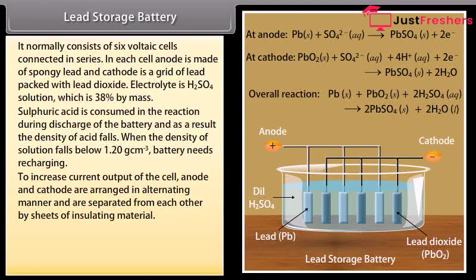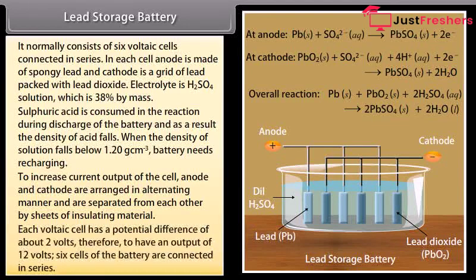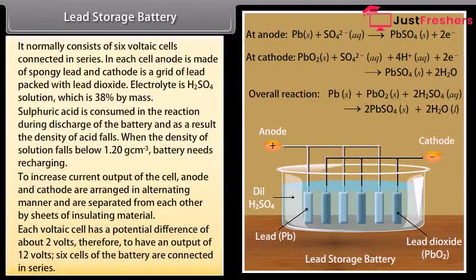Each voltage cell has a potential difference of about 2 volts. Therefore, to have an output of 12 volts, six cells of the battery are connected in series.